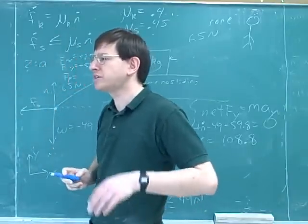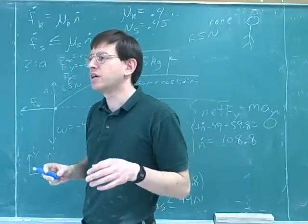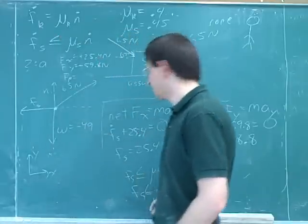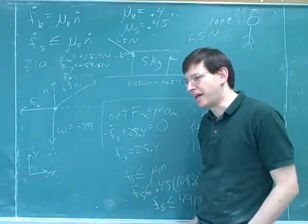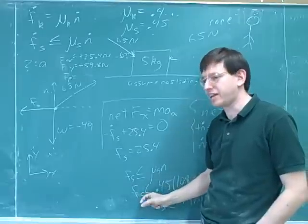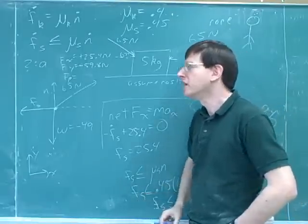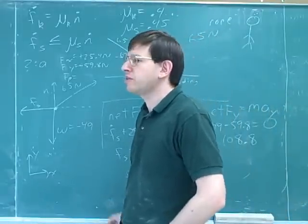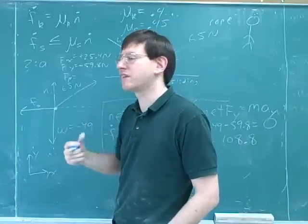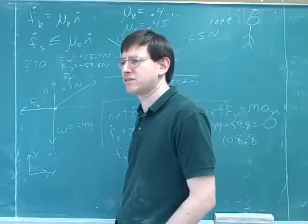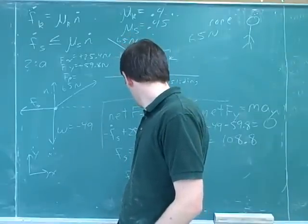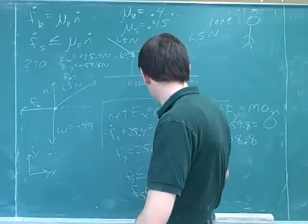All right, now you can see why when the question is asking you whether something's going to happen or not, you want to make the assumption that will give you an inequality because that gives you something to check at the end. We used Newton's Second Law here to get a value, and then we were able to check that against our inequality to see whether it made sense or not. This is, I think, already a kind of tricky kind of problem, so it's good that we can do it. We had some time to talk about this.